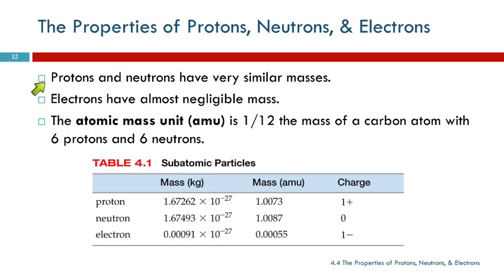We do need to know some things about protons and neutrons. Protons and neutrons have very similar masses - for our purposes, they're the same. Electrons have almost negligible mass. They're so small, it doesn't really matter. The atomic mass unit is the unit that was created to measure the size of atoms and the particles inside of them, because a gram is way too big.